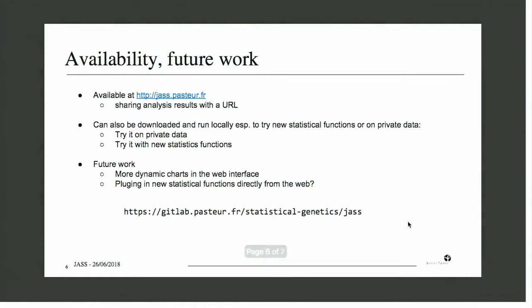So JASS is available as a public web server on our Pasteur website with a set of selected GWAS studies. But you can also download and run it locally on your private data or to try new statistical functions which can very easily be plugged in into the library.